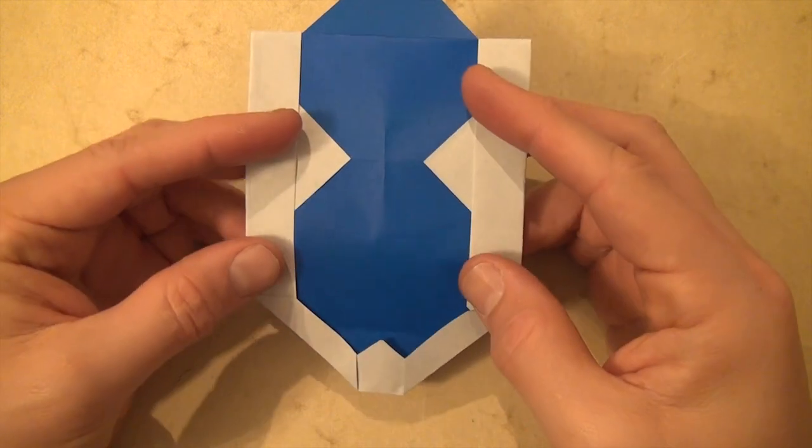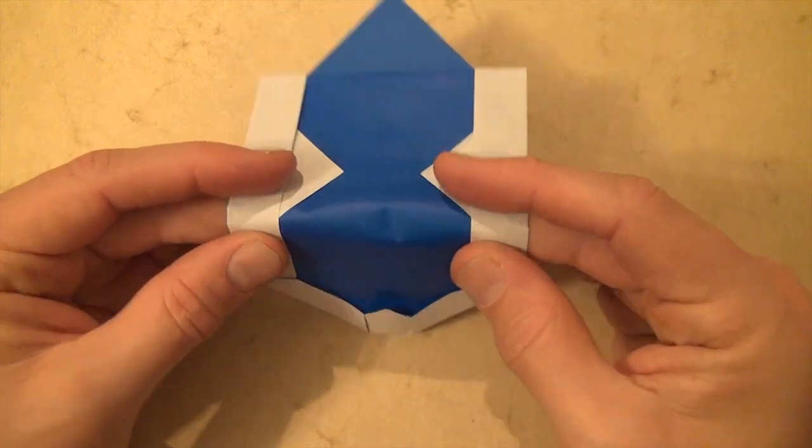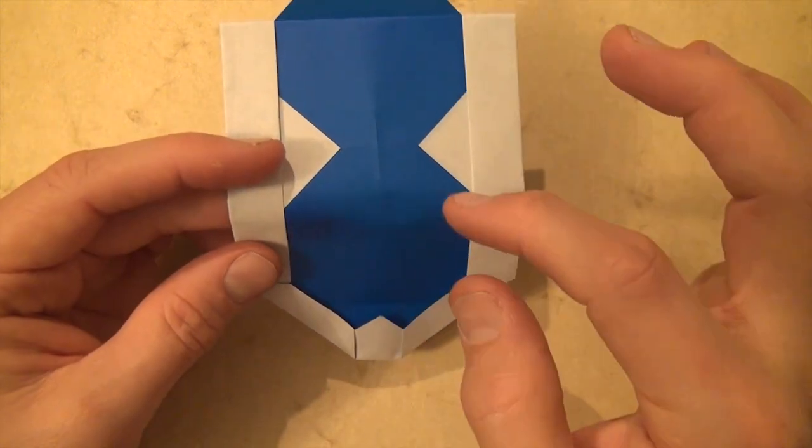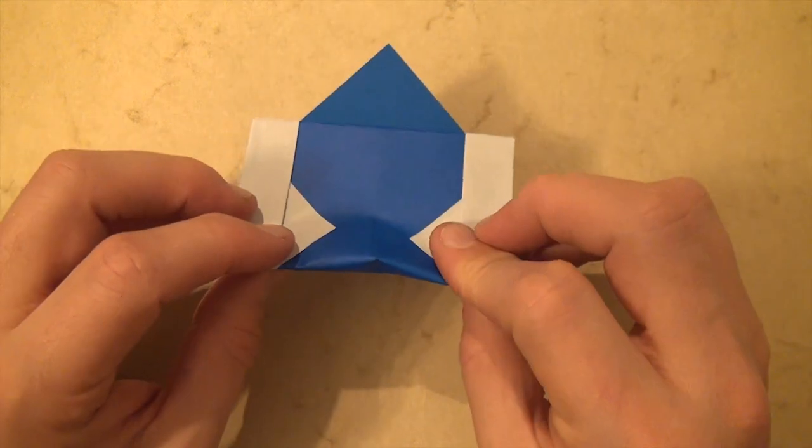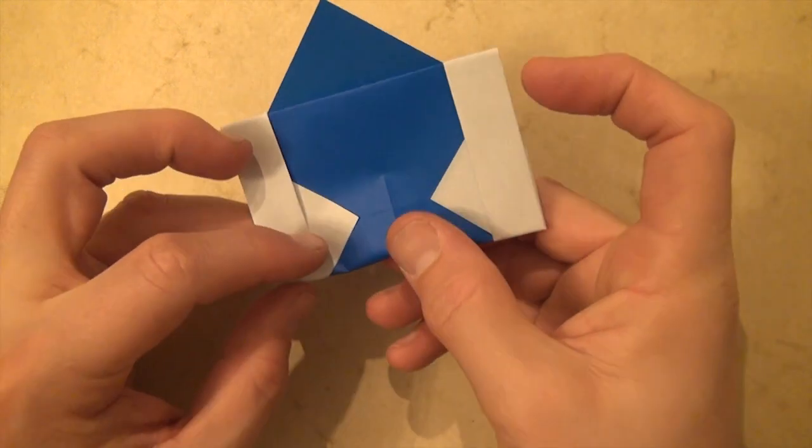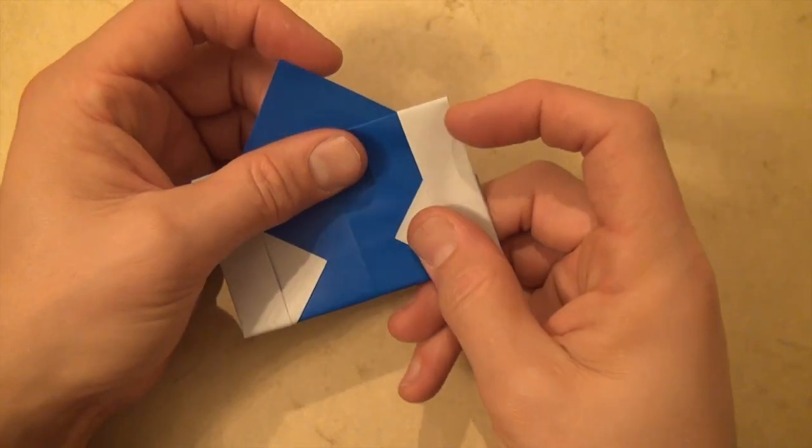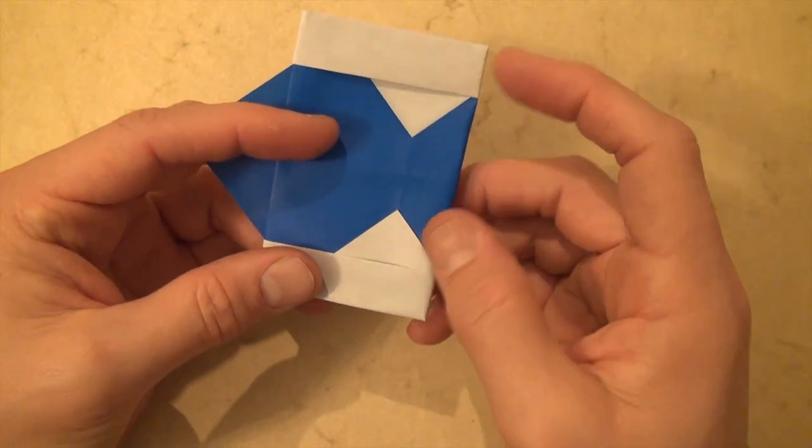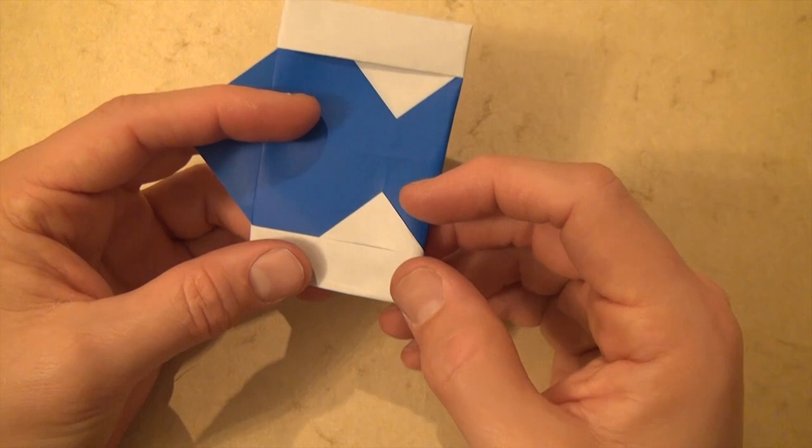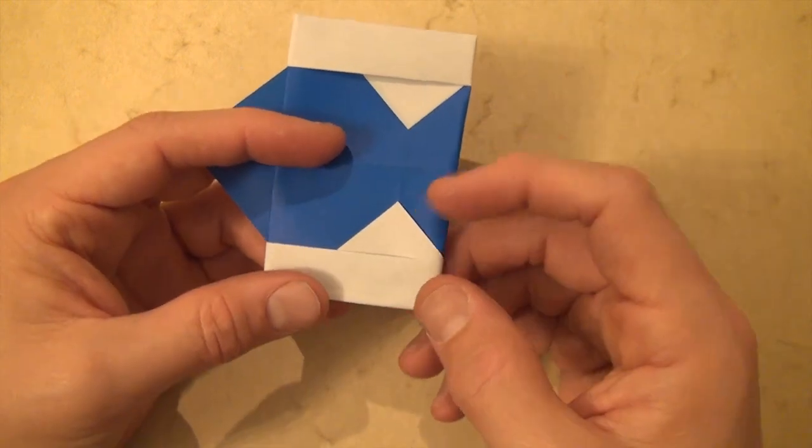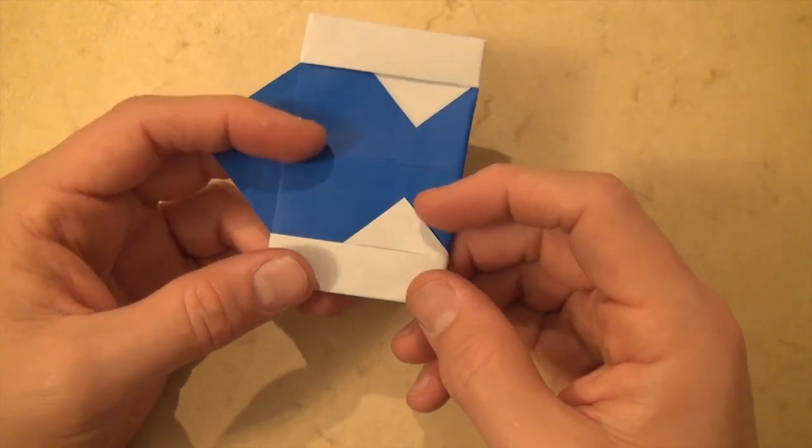And now, let's fold the lower part behind right on this point and this point. So, it's a mountain fold folding behind. And so, here we have the little fish. And once again, it's not really good to make a very sharp crease here. Just make it light like this side.